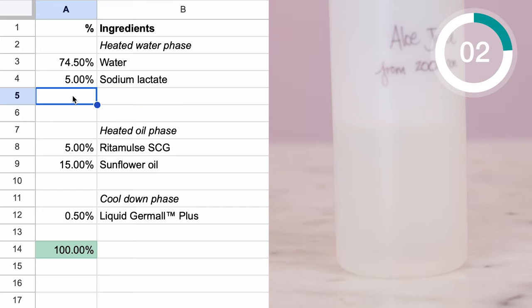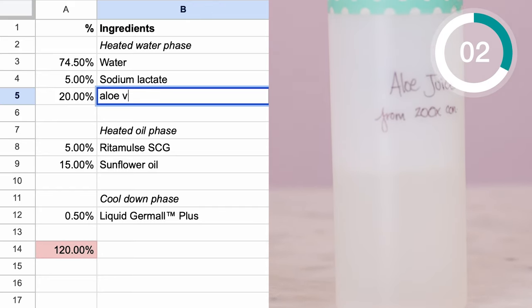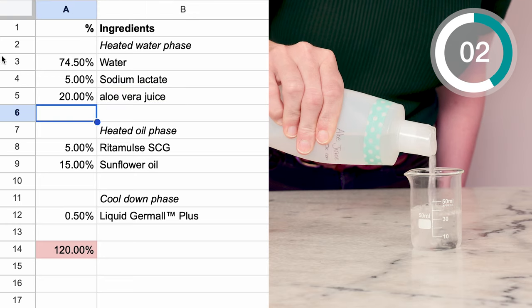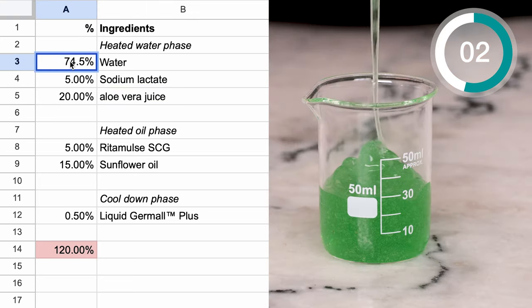Our next tip is an easy way to add some skin soothing benefits and boost the label appeal. Trade 20 percent of the distilled water in the formulation for aloe vera juice. And this is a thin, watery ingredient. Do not use a thick green gel from the drugstore. Now, aloe vera is lovely, but it is electrolyte rich, and that can thin your emulsion. So start around 20 percent, and if that works well, you can use more next time.